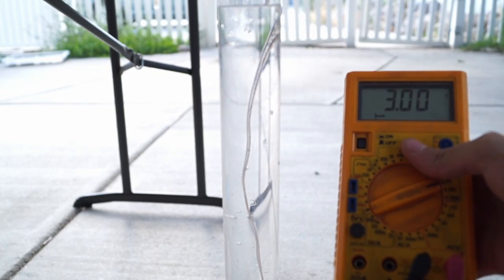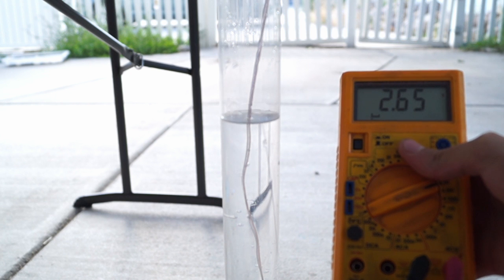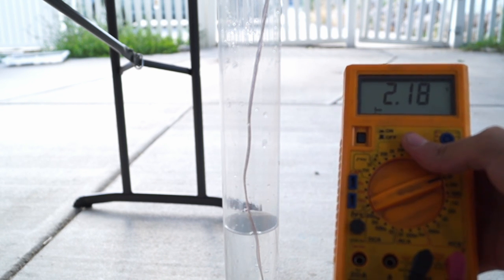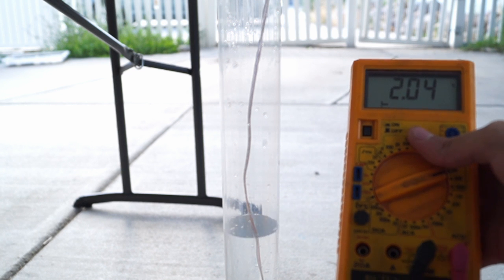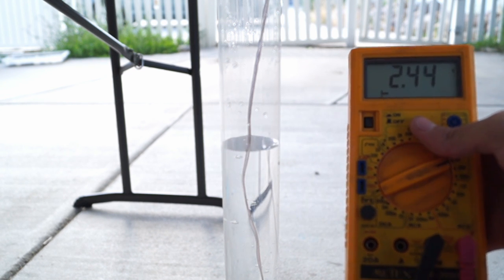Now that everything is hooked up we can demonstrate the aquaplum in action. As the water lowers down on the sensor you will notice that the reading on the meter goes down. Likewise as the water raises up on the sensor the reading goes up.